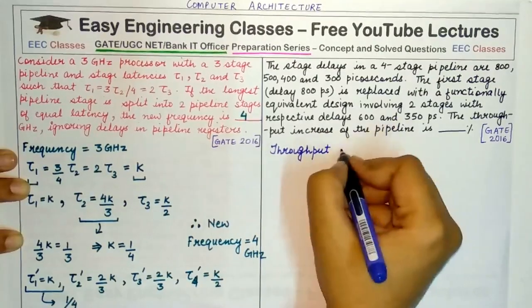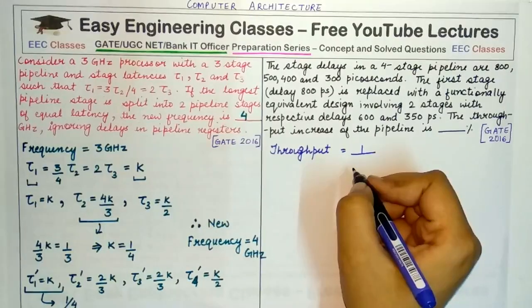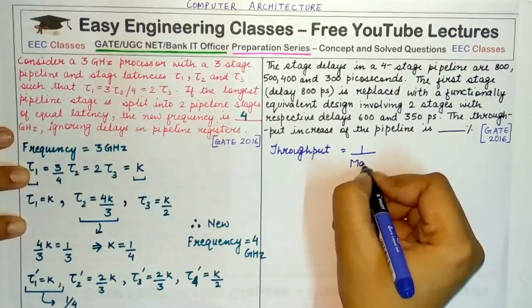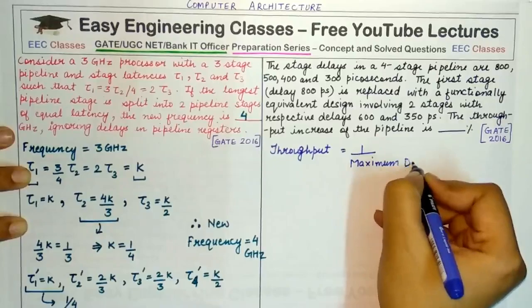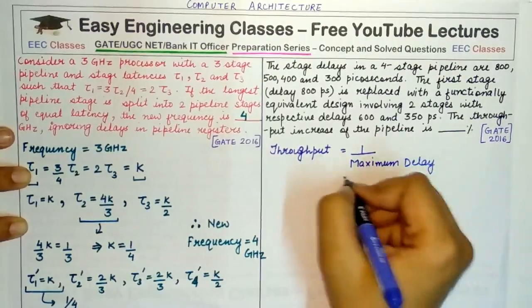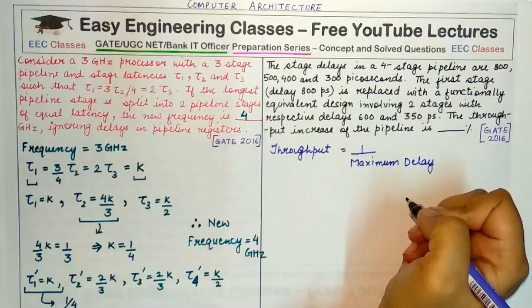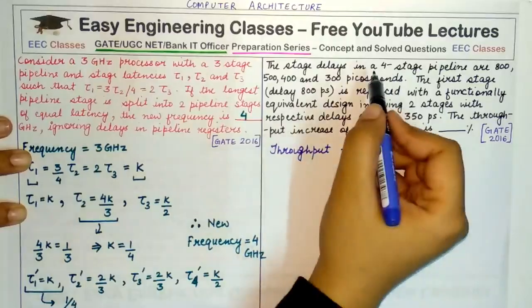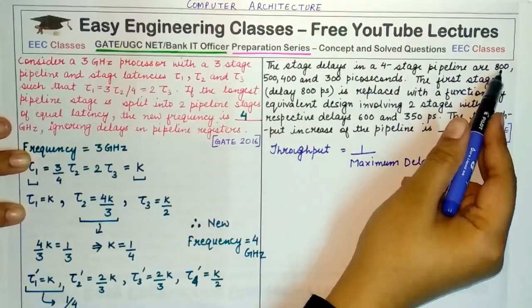Throughput is given by the formula: 1 divided by the pipeline stage that has the maximum delay. This maximum delay corresponds to one of the pipeline stages out of all the stages present in the given n-stage pipeline. Here we have four stages, and the maximum delay is given by the first stage, which is 800.